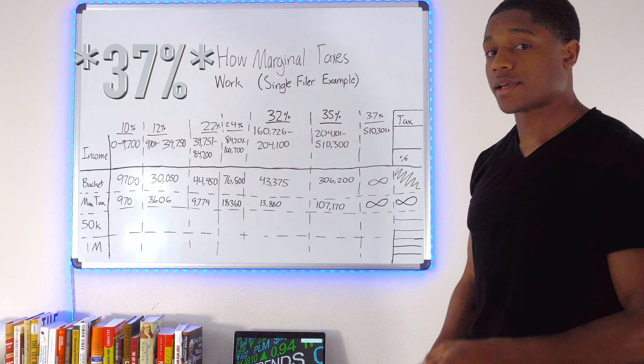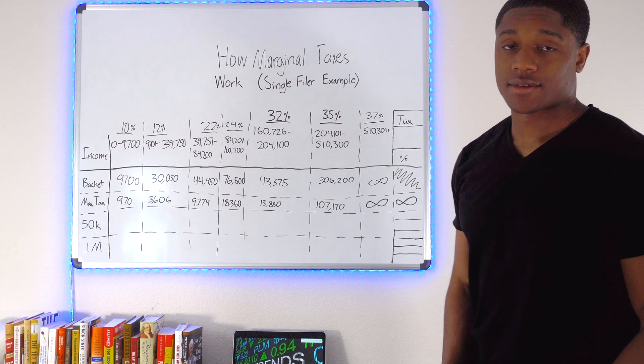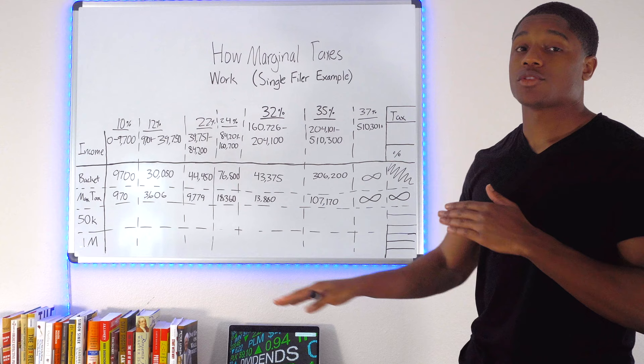If you know anything about tendencies to lines, essentially, as you go higher and higher, you're basically going to be paying an effective 37% tax rate. Because if you make like $20 million, you're basically paying 37% on most of the money that you made. Okay, let's get into our 50k example and we'll get into our 1 million example. And that will close out the video.